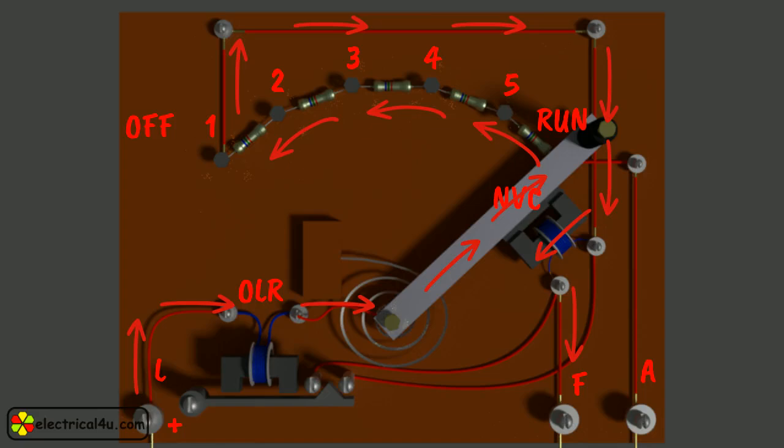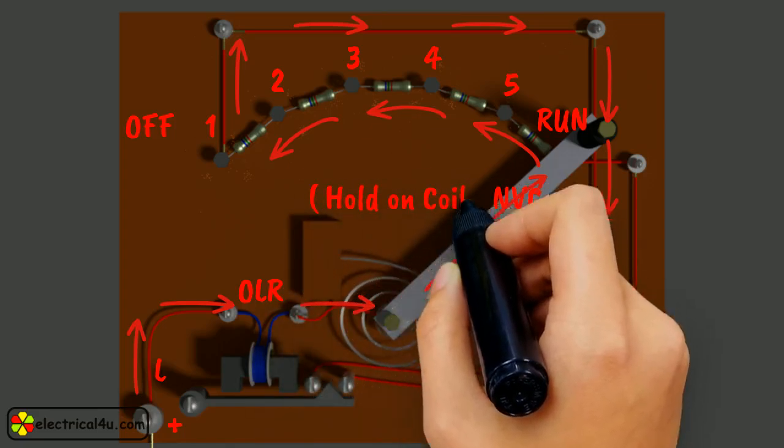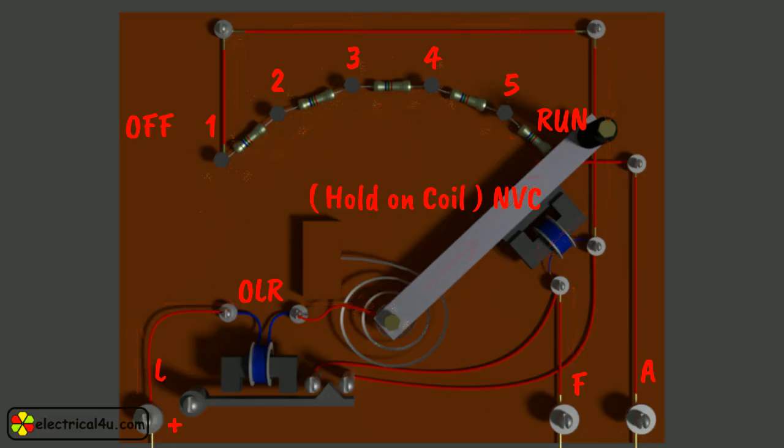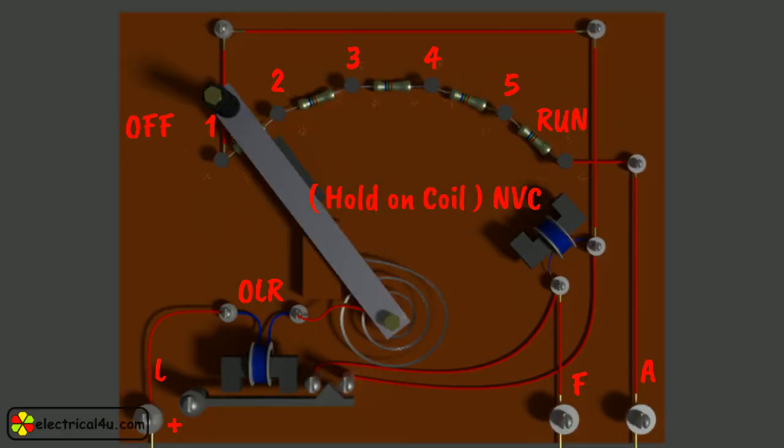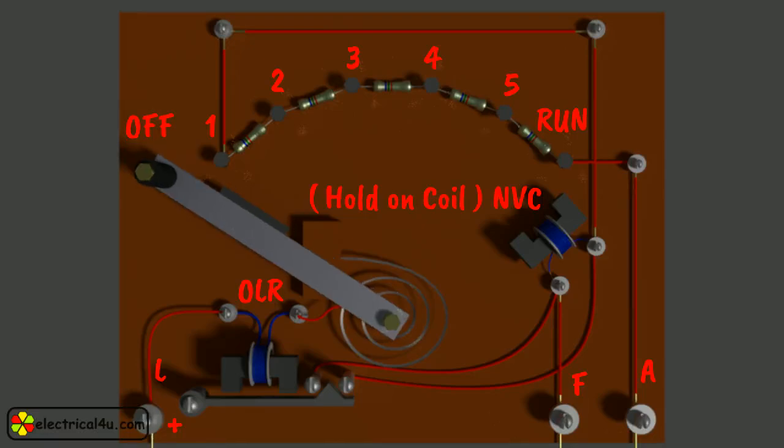Thus NVC holds the handle in the run position and hence is also called hold-on coil. Now when there is any kind of supply failure, the current flow through the NVC is affected and it immediately loses its magnetic property and is unable to keep the soft iron piece on the handle attracted. At this point, under the action of the spring force, the handle comes back to off position, opening the circuit and thus switching off the motor. Thus it also acts as a protective device, safeguarding the motor from any kind of abnormality.